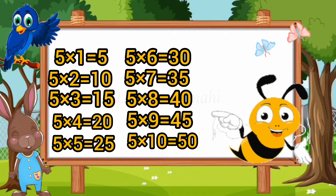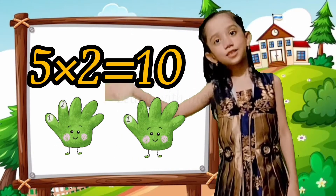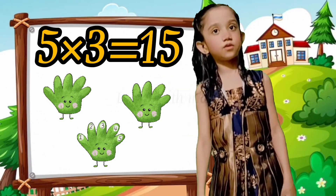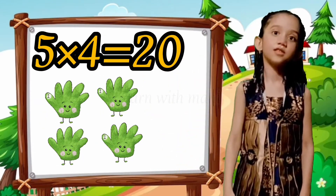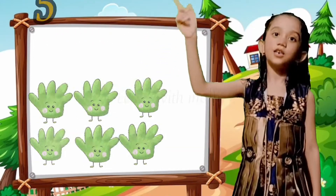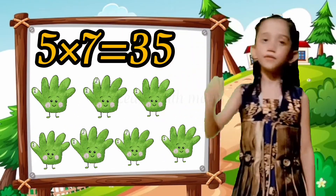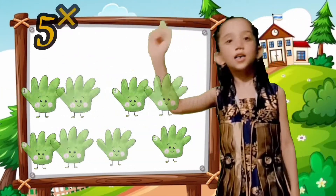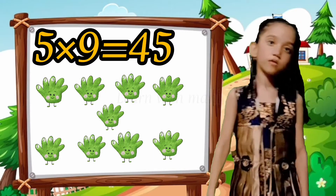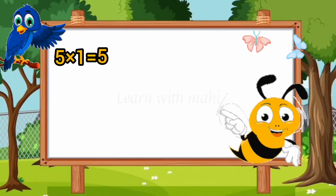5 ones are 5. 5 twos are 10. 5 threes are 15. 5 fours are 20. 5 fives are 25. 5 sixes are 30. 5 sevens are 35. 5 eights are 40. 5 nines are 45. 5 tens are 50.